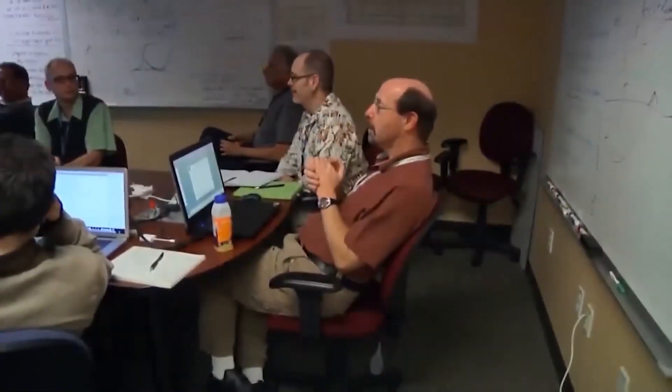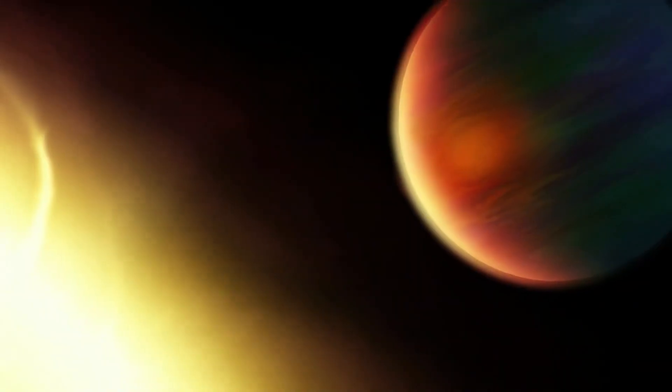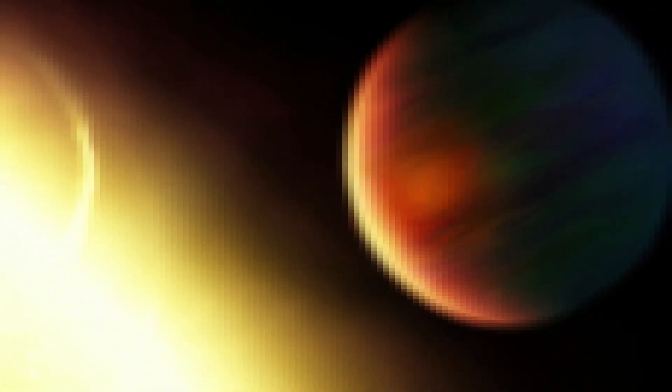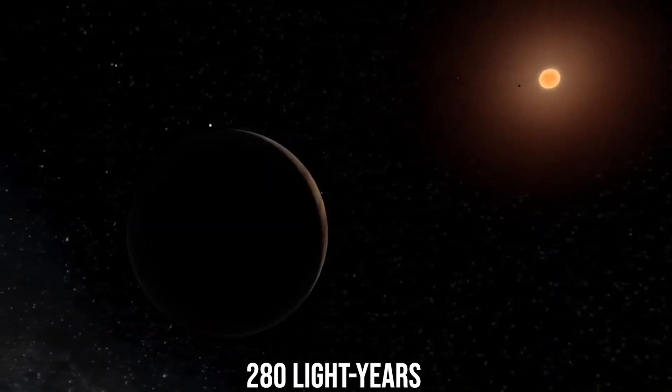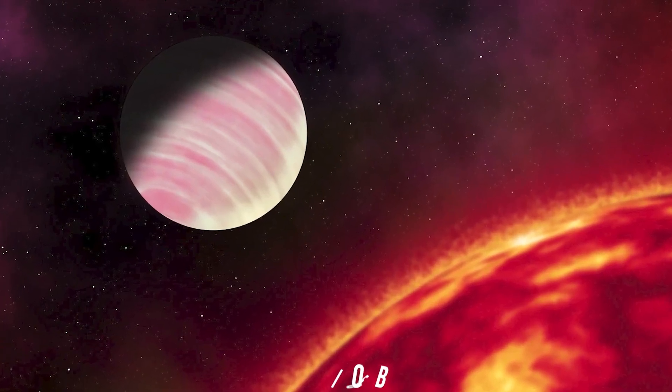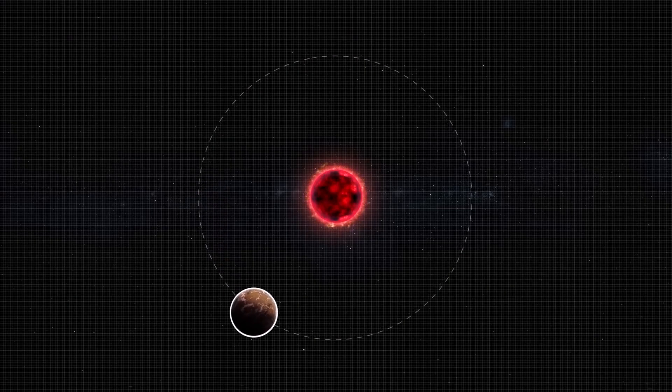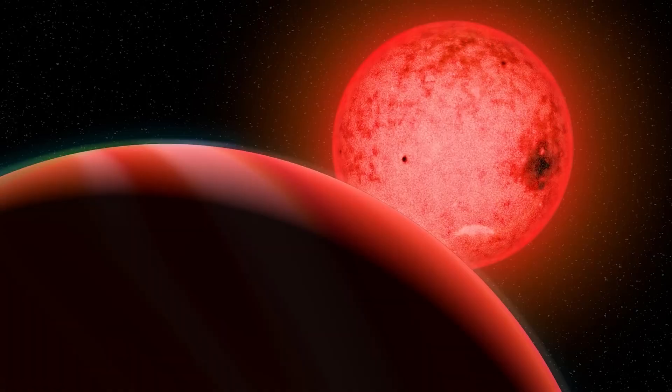Recently, astronomers have discovered a planet that has defied all expectations, leading them to call it the Forbidden Planet. Located about 280 light years from Earth, this mysterious world, known as TOI-5205b, orbits a small red dwarf star. But here's where things get interesting.